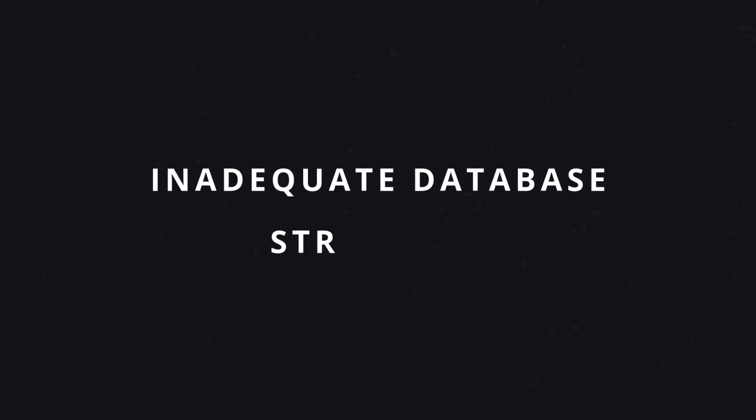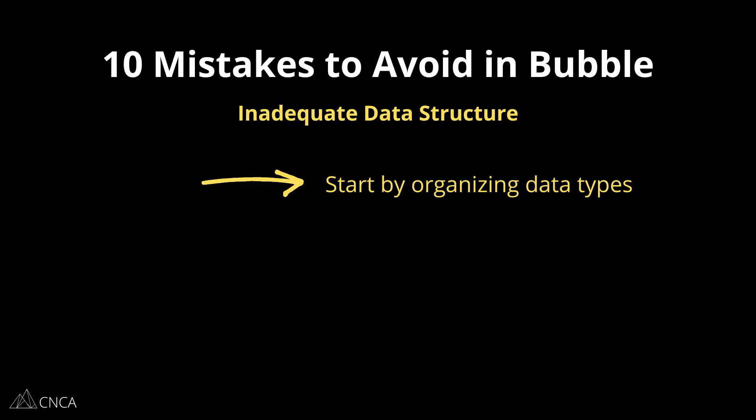The next mistake you want to avoid is an inadequate database structure. Poorly designed databases can lead to performance issues and difficulty scaling, because so much of how your app works is dictated by the database. You want to pay attention to how you organize your tables and how records relate to one another — it makes a huge difference in how smoothly your app runs. Here are the areas you should pay attention to.